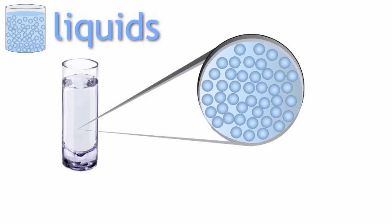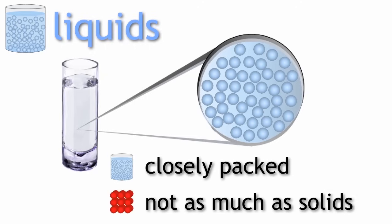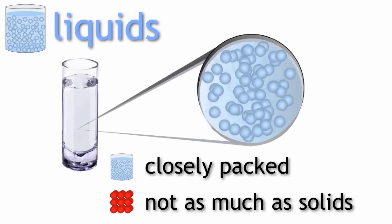In a liquid the particles are again closely packed, but not as closely packed as in solids. So this means the particles in liquids can move around each other.